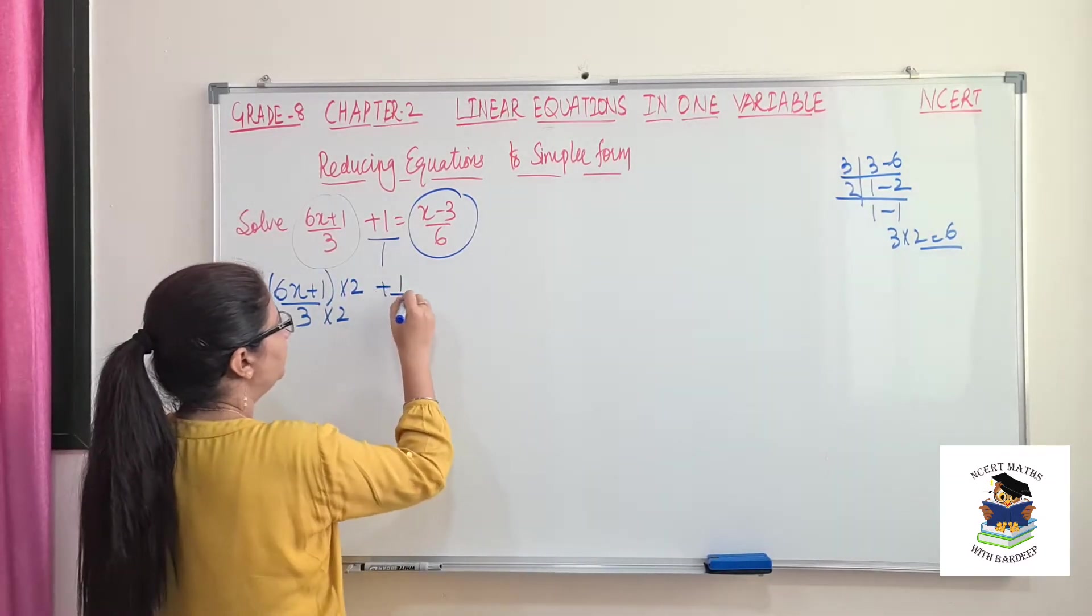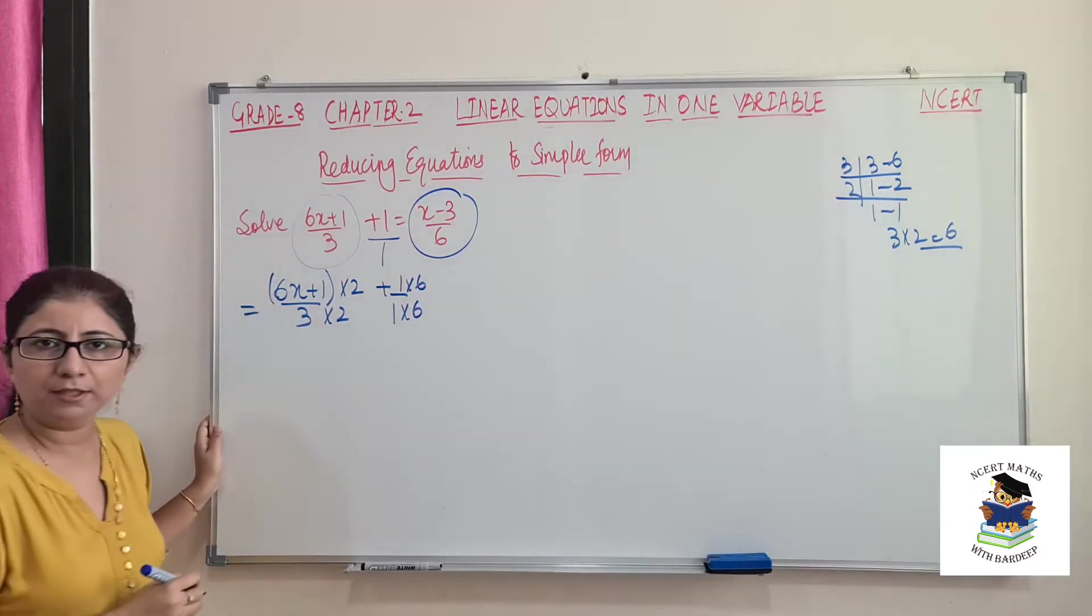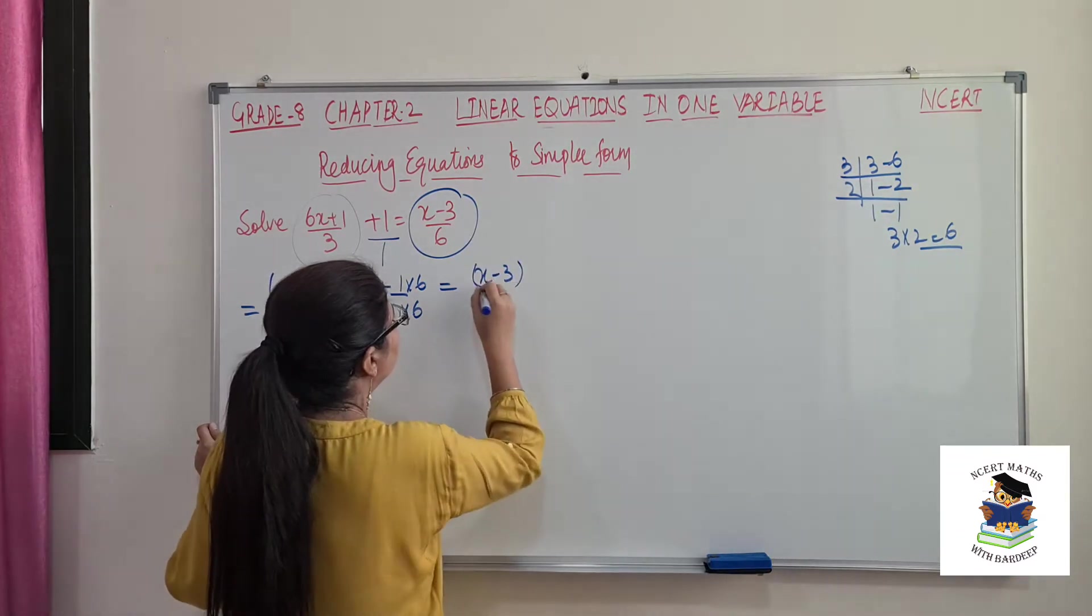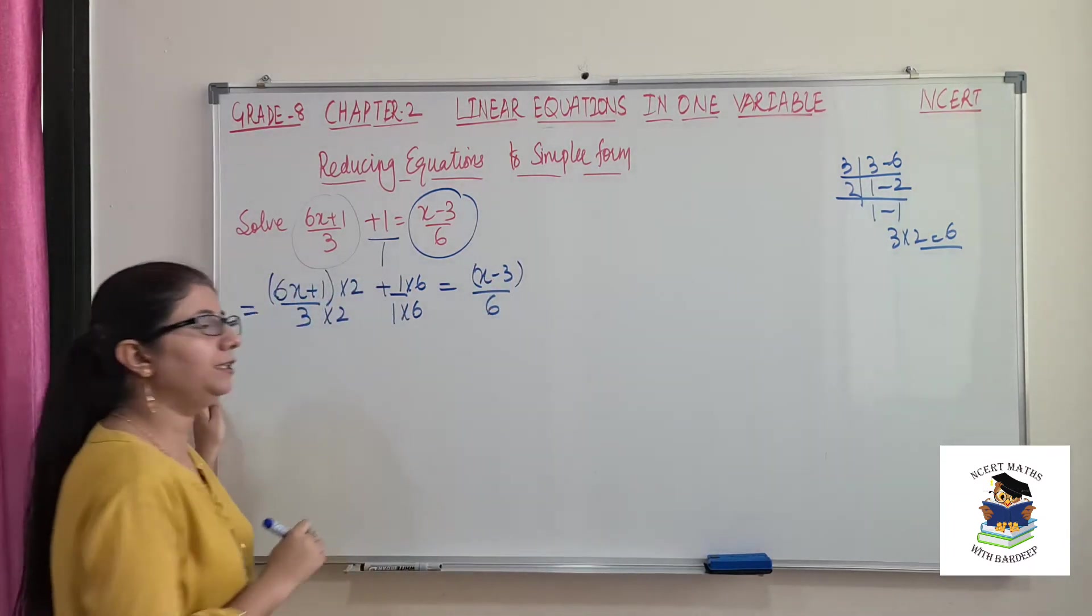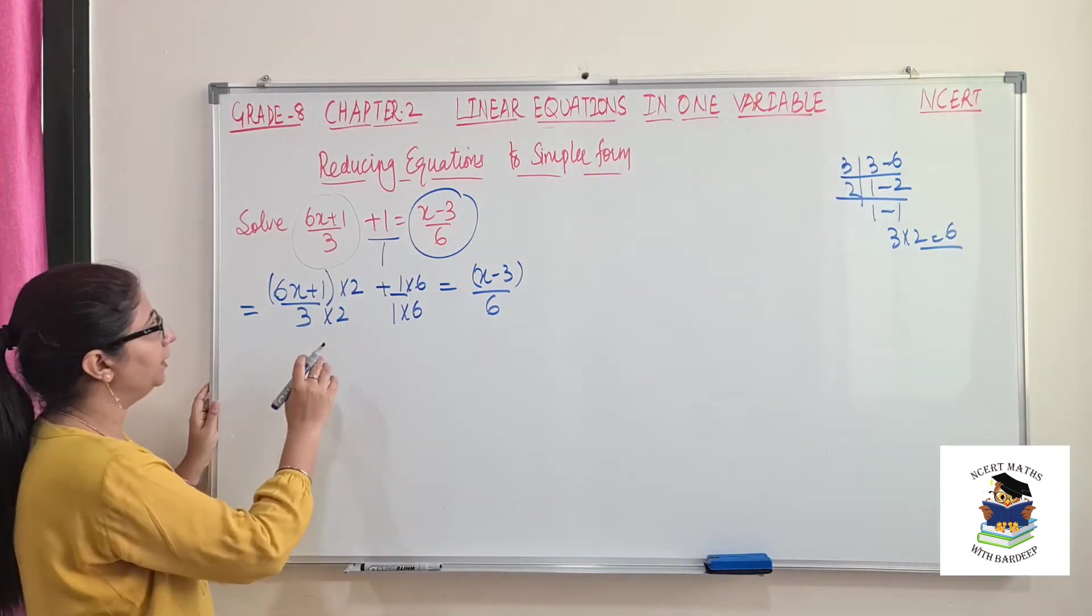So here it is already 1, so we will multiply both numerator and denominator with 6. Here again we have 2 numbers, so already denominator is 6, so no need to do anything else. So now we will open this.